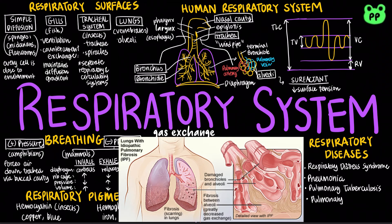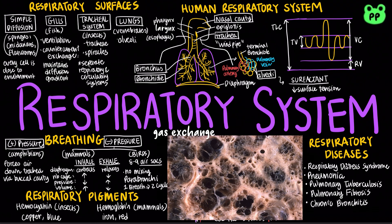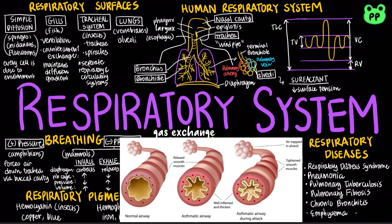Pulmonary fibrosis occurs when lung tissue becomes damaged and scarred, causing fibrous connective tissue to build up in the lungs and leading to difficulty in breathing. Chronic bronchitis is inflammation and irritation of the airways, which causes mucus to build up and leads to difficulty in breathing. Emphysema occurs when alveoli burst and fuse into enlarged air spaces, reducing the surface area for gas exchange. Asthma occurs when airways are inflamed due to irritation and bronchioles constrict due to muscle spasms, leading to wheezing, coughing, chest tightness, and shortness of breath.